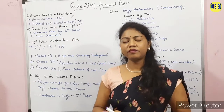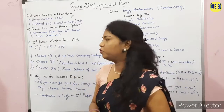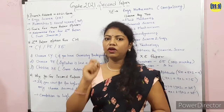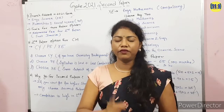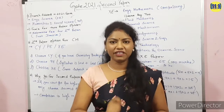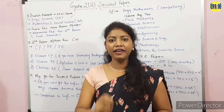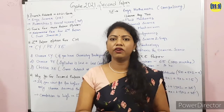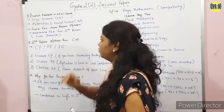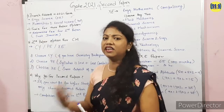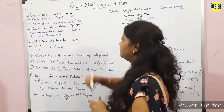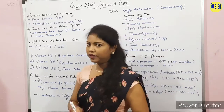A common doubt from students is about the fee structure if you opt for the second paper. Basically, if you are opting for two papers, you have to pay double the amount of a single paper. It means if you are from the general category and your fee is 1500, you have to pay 3000 for the examination. So you pay double according to your category.